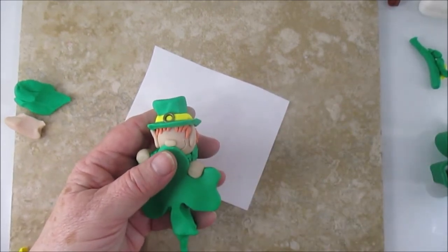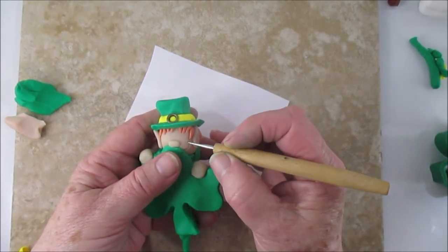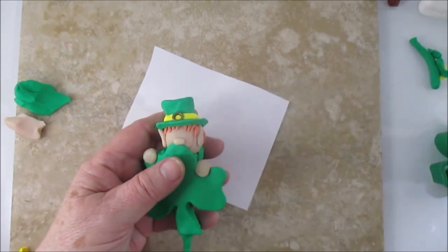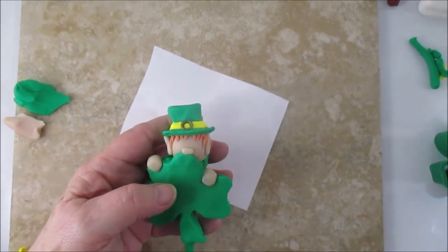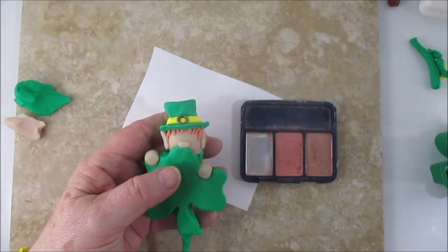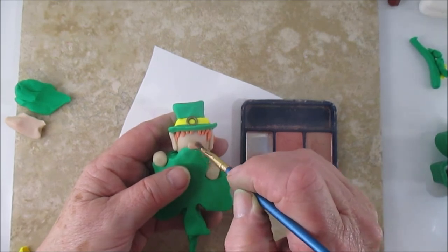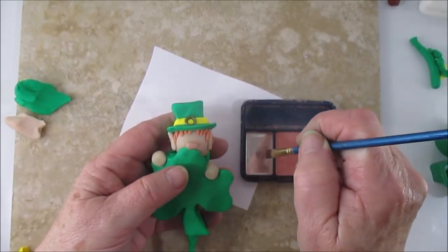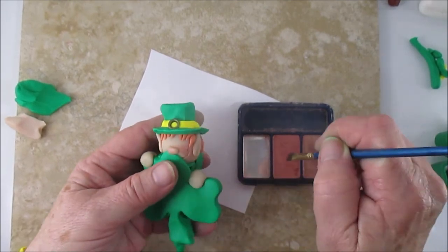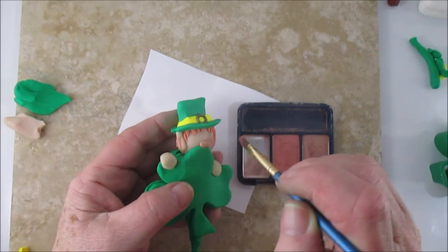Now we're doing the mouth with the needle tool, and we're just doing one side of his mouth because the other side is kind of hidden. And of course, as always, blush before you bake. I put blush on his cheeks, his nose, his ears, and a little bit on his hands.